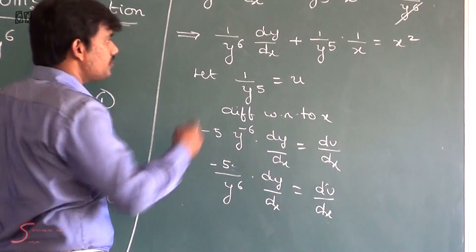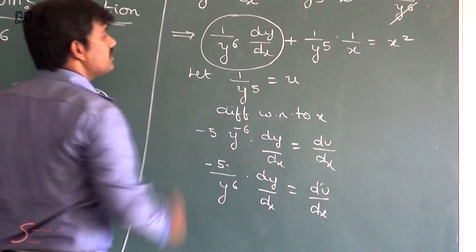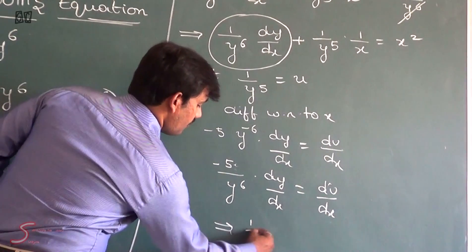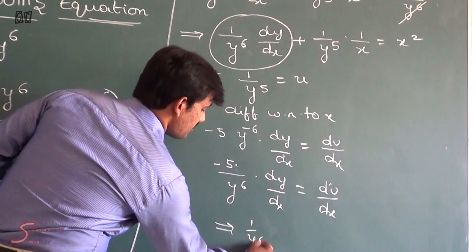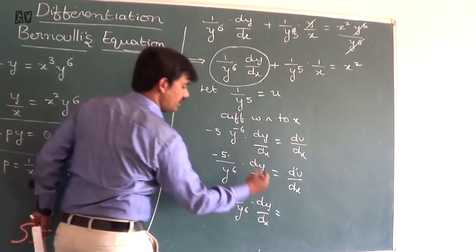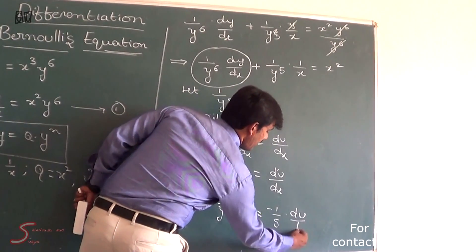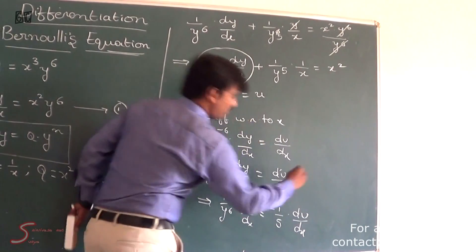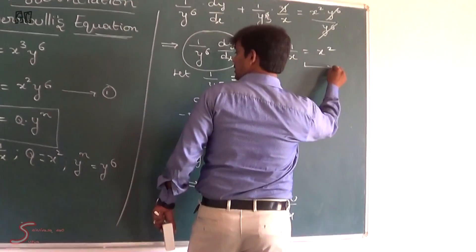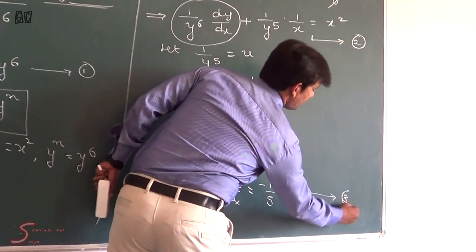Our aim is to find the expression (1/y⁶) · (dy/dx). From our substitution result, (1/y⁶) · (dy/dx) = −(1/5) · (du/dx). This is our key substitution result.